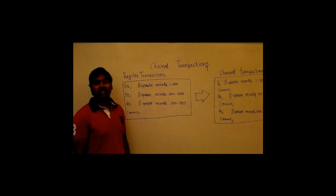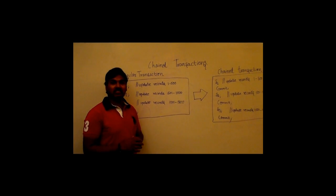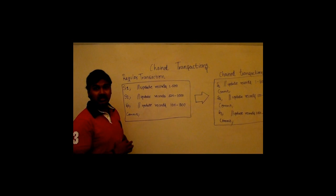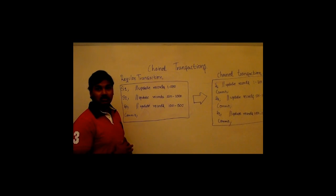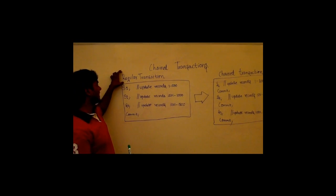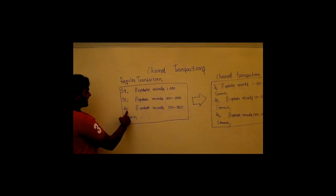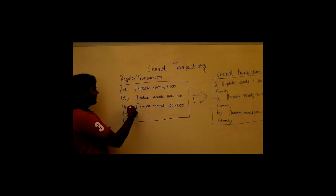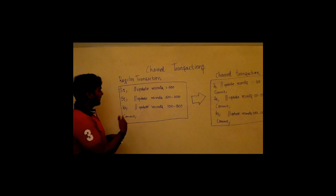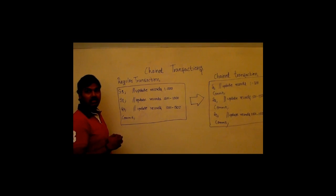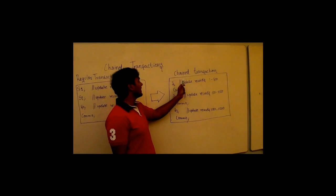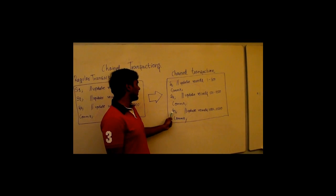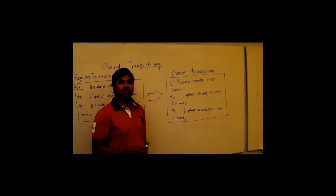And chain transactions. Chaining is the process of decomposing a transaction into sub-transactions with intermediate commit points. And the main advantage of using a chain transaction is less work is lost in the event of a crash. Considering this as an example, these are regular transactions with three transactions, S1, S2, S3, with a single commit point. So, in the event of a crash, all the work which is done within the three transactions, maybe two transactions, all the work is lost. And this is the example for chain transaction. It has intermediate commit points for each and every transaction. So, less work is lost in the event of a crash. Thank you.